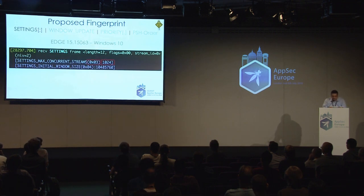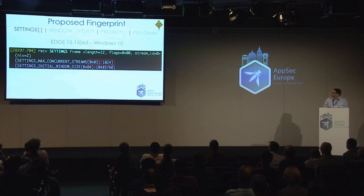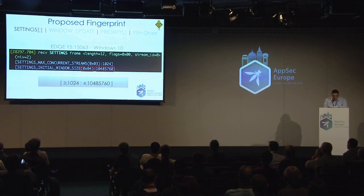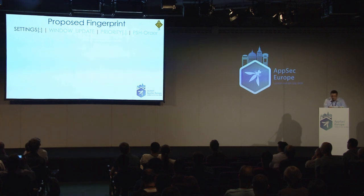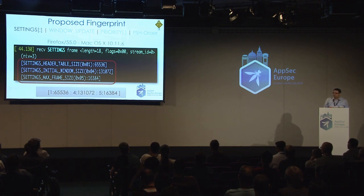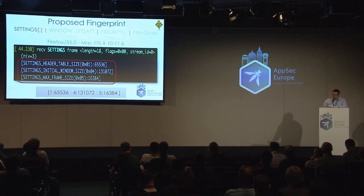What we propose is taking the hex notation of the type of the settings and concatenating it with the default value sent. This is shown for Edge, and we can see the same example for Firefox 55. But as I said, that was not enough — we had to gain more entropy, to break down those clusters. So we moved on to the next type of frame.